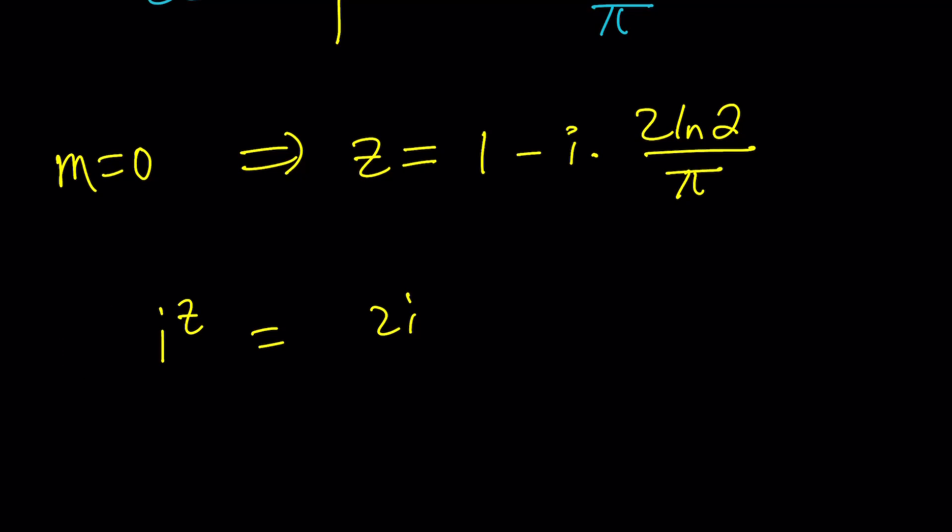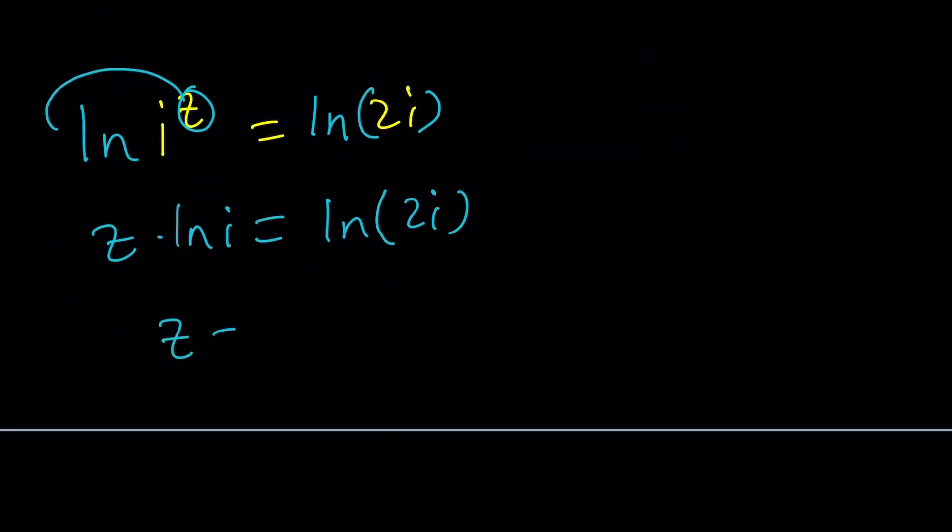Instead of log, which is base 10, I think natural log would be a better idea. And now you can go in and move the z. This will become z times ln i equals ln 2i. And then from here,